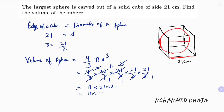So 21 squared is 441, and 441 times 11. You can apply the shortcut: write 4, then 4 plus 1 is 5, then 4 plus 4 is 8, and last write 4 — giving 4851 centimeters cubed.